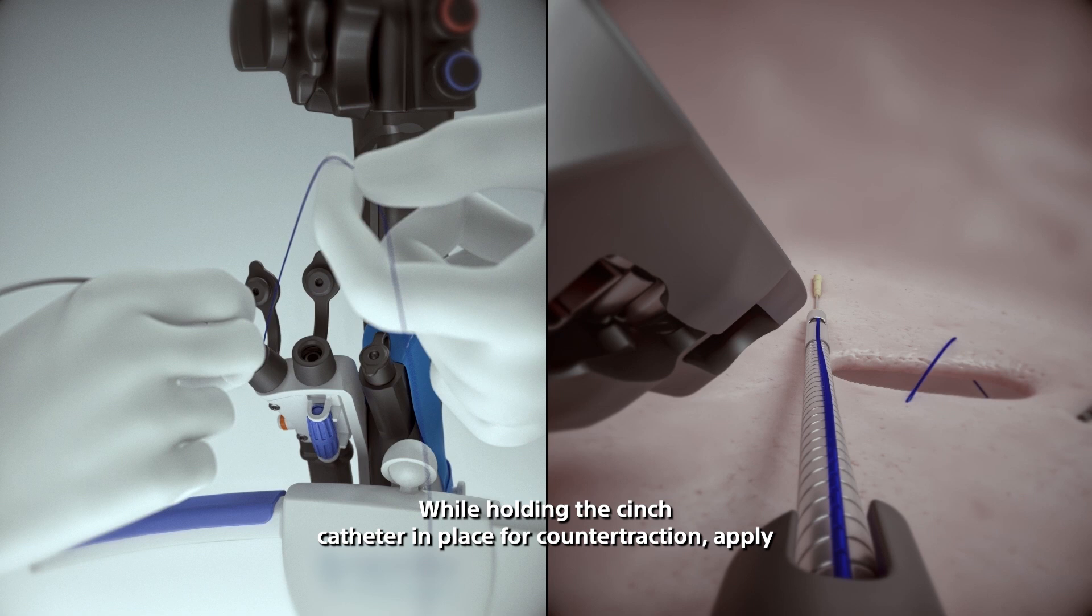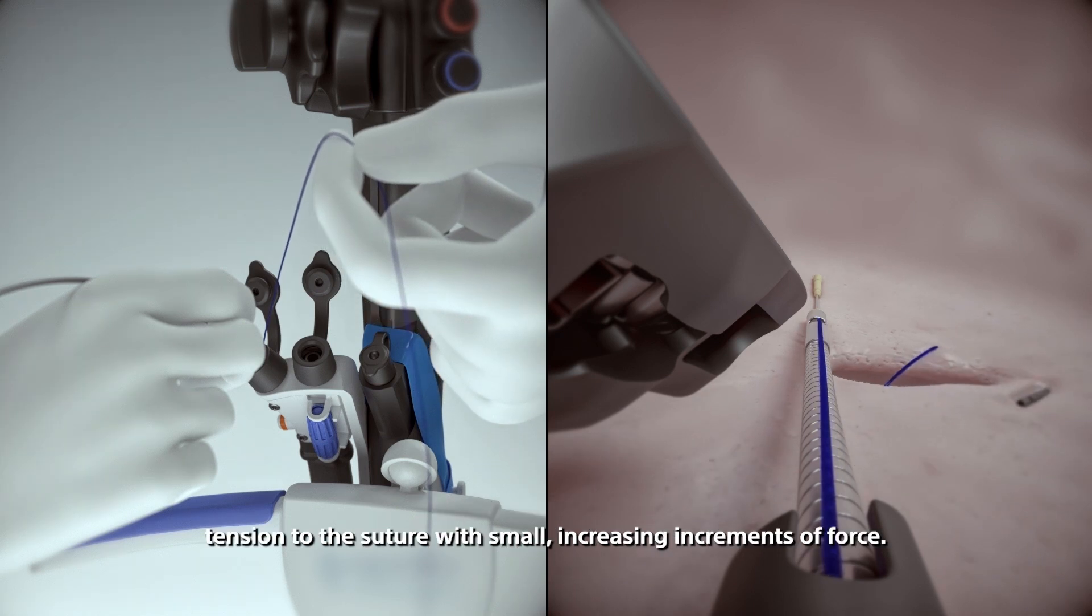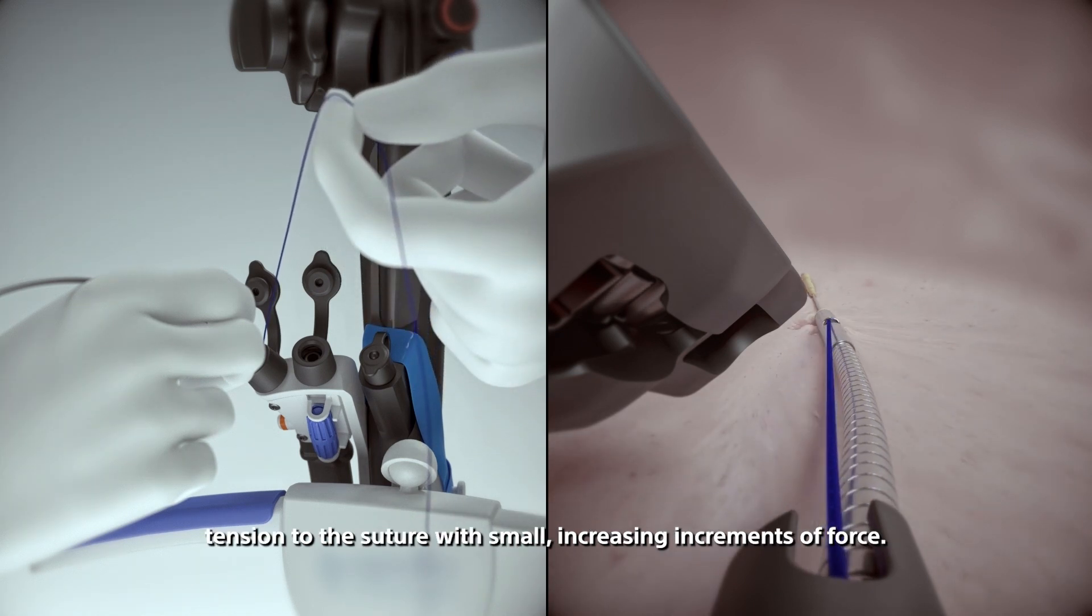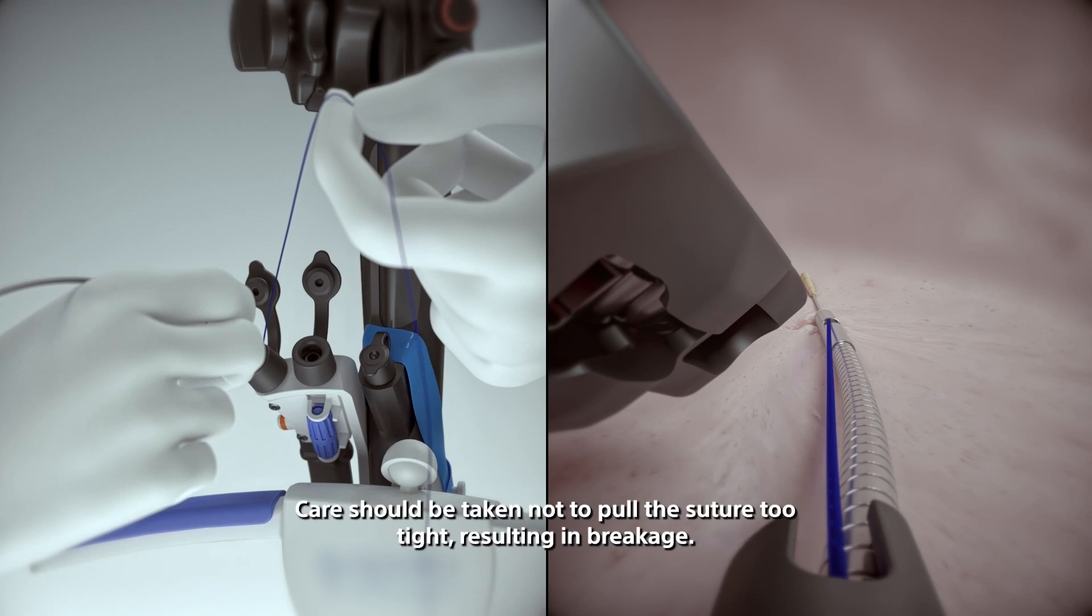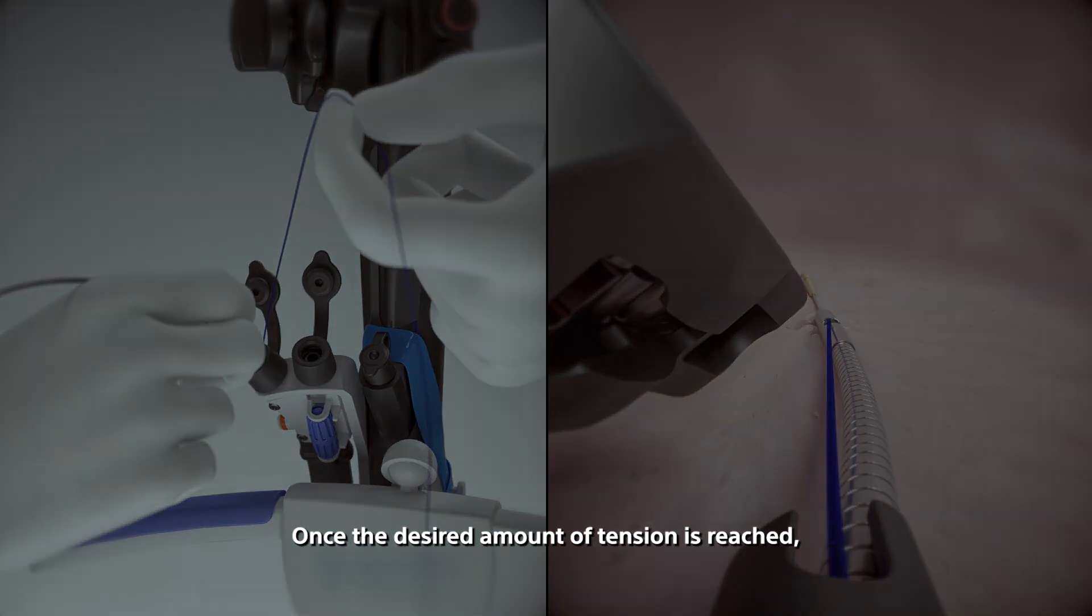While holding the cinch catheter in place for counter traction, apply tension to the suture with small, increasing increments of force. Care should be taken not to pull the suture too tight, resulting in breakage. Once the desired amount of tension is reached, open the cinch handle with the palm facing down.